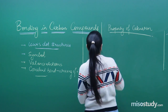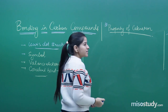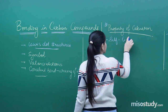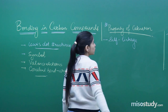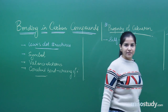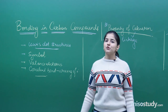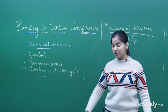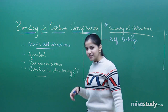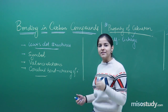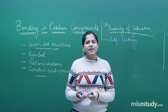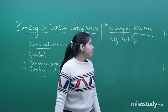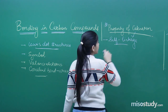Catenation is a very important property of carbon. Carbon self-links — it has the ability to combine with another carbon, and then another, and another, to form big long chains or branches, even compounds with millions of carbons. The main helpers in these structures are hydrogen and some heteroatoms. So catenation is the self-linkage property of carbon.